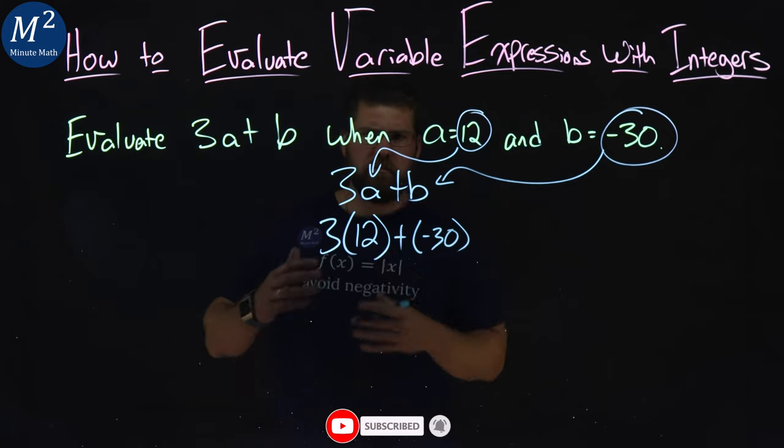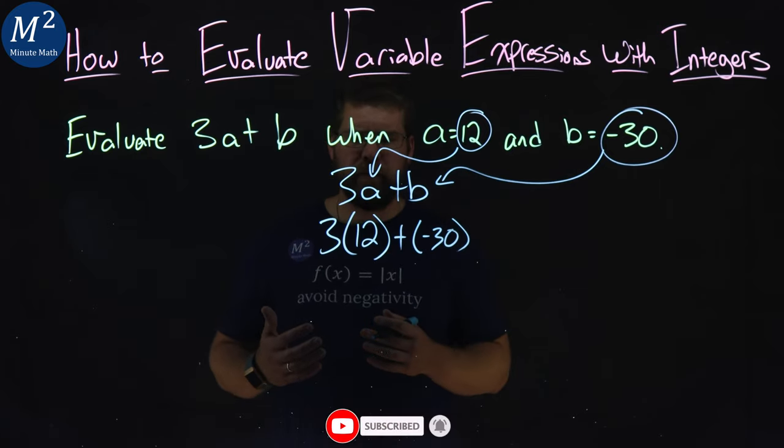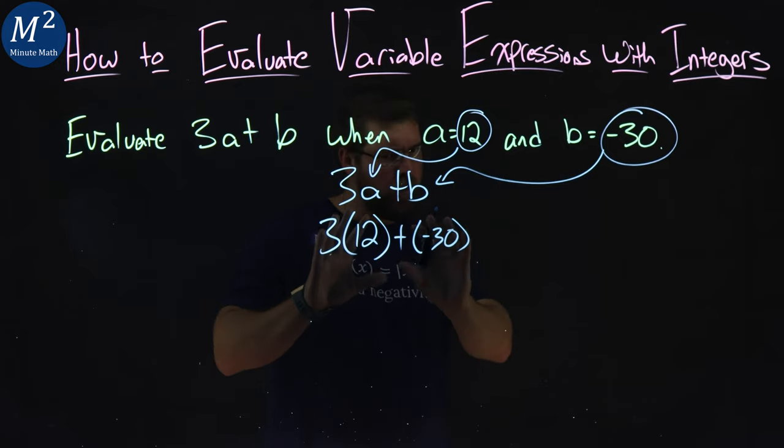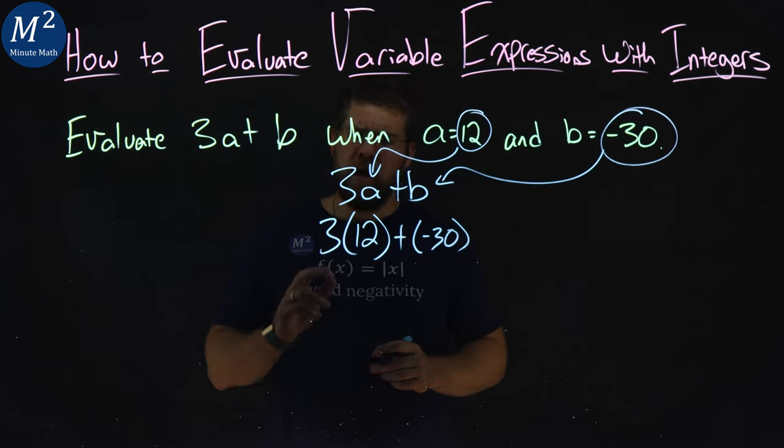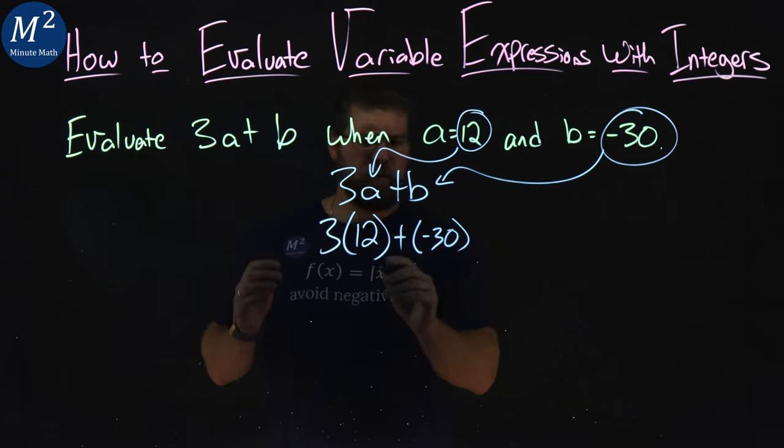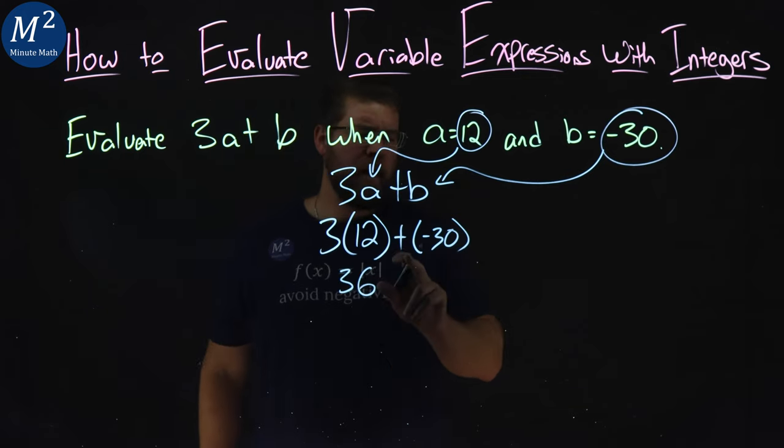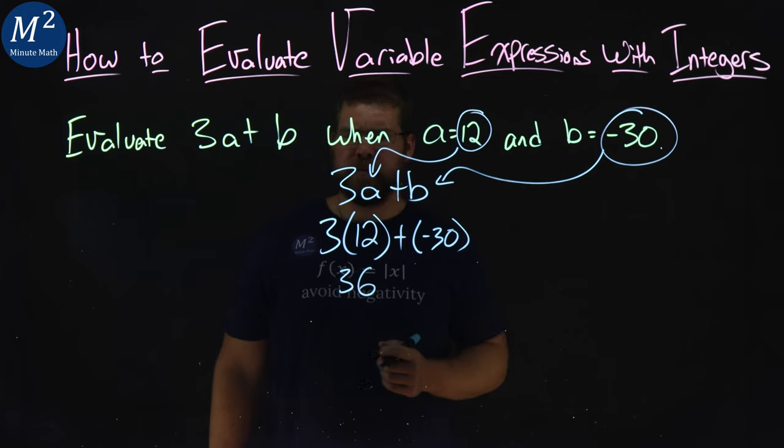Now let's simplify this out some. Order of operations says multiplication from what we have here comes first. 3 times 12 is 36. Now we have plus a negative 30. Plus a negative 30 is the same thing as subtracting a 30.